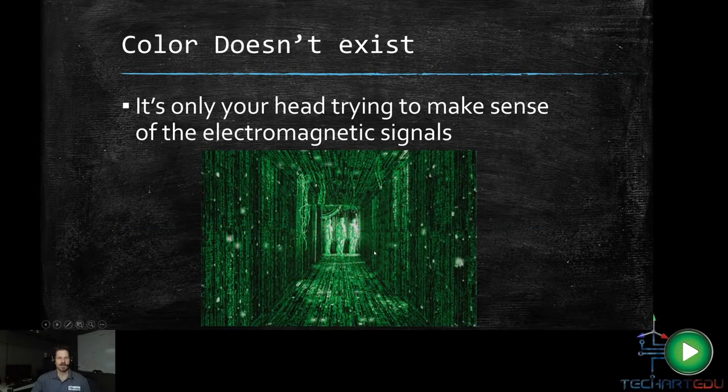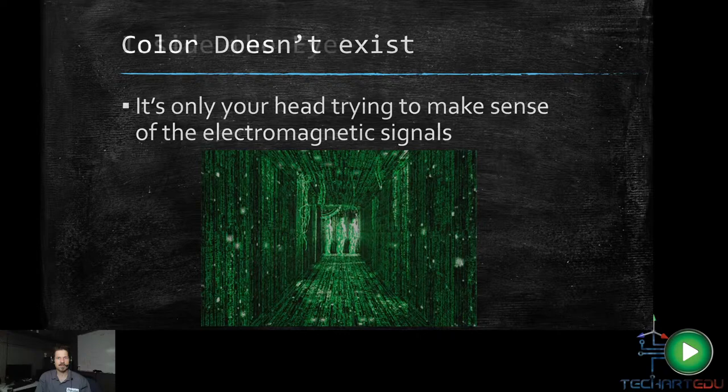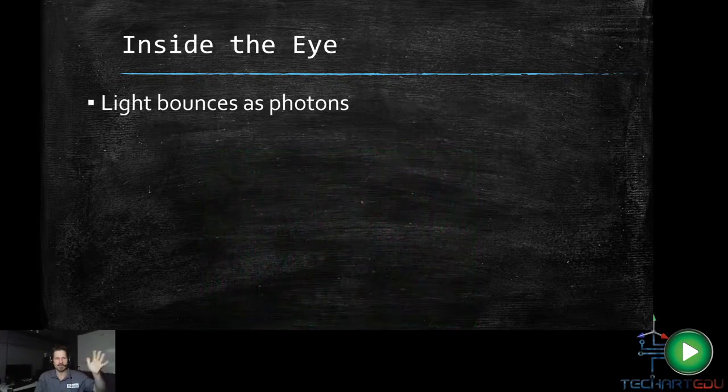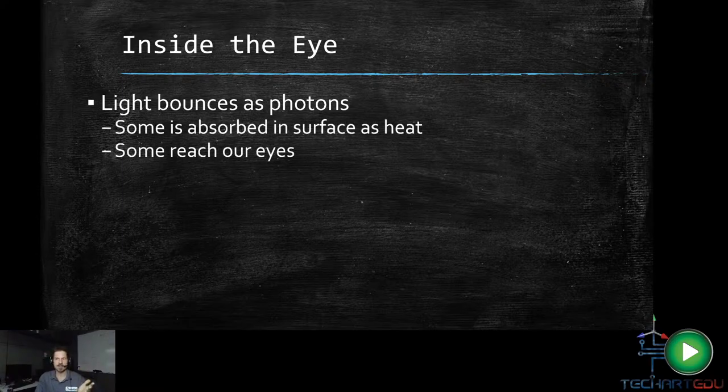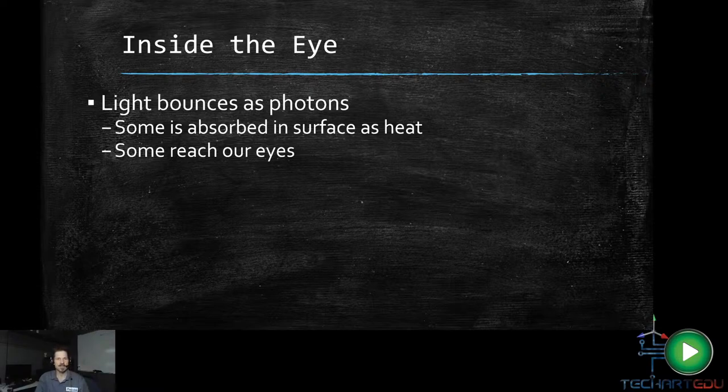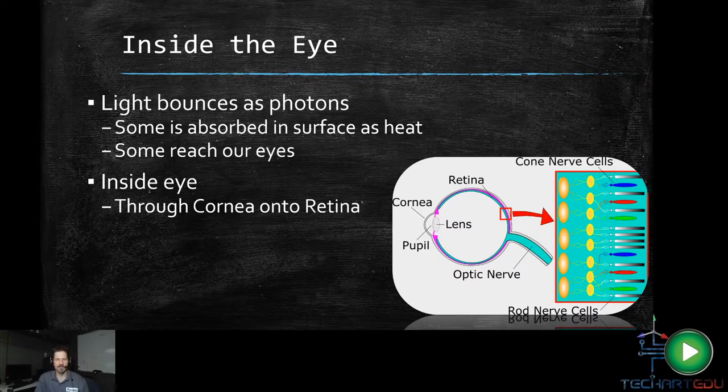All right, so we all know that color doesn't really exist. It's kind of a thing that our human brains, well, mammals on Earth and other critters on Earth, have created so that we can make sense of all these electromagnetic signals bouncing around in the world. And so really that's what light is, is just bouncing around off things, and color is kind of like what happens when light bounces off of them. So inside of your eye, light bounces into your eye, and they come across as photons, which are kind of like little baby particles. And some of it is absorbed as heat, and some reaches our eyes. And here's a little picture of the eye.